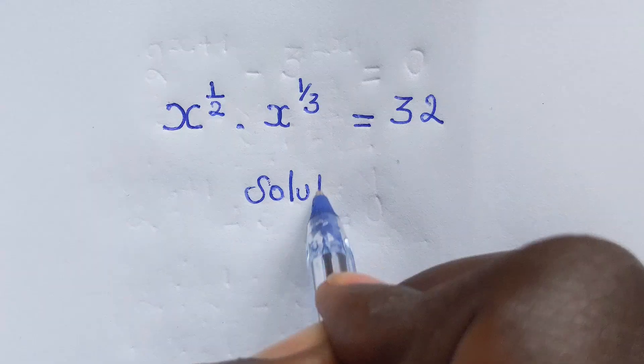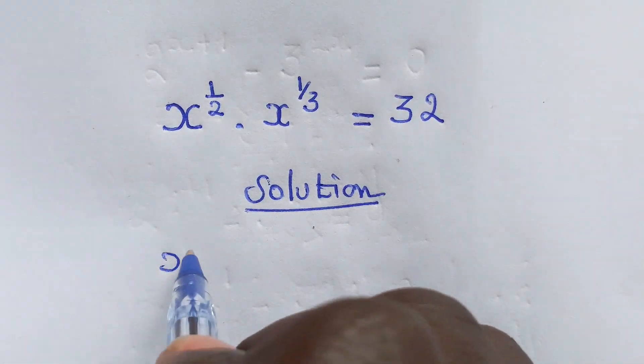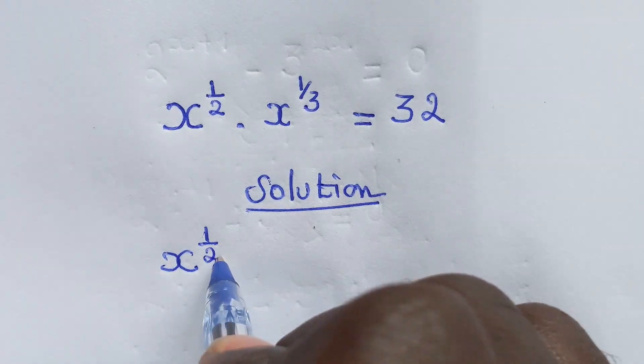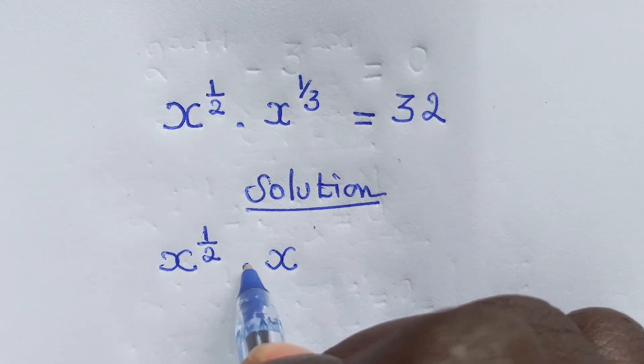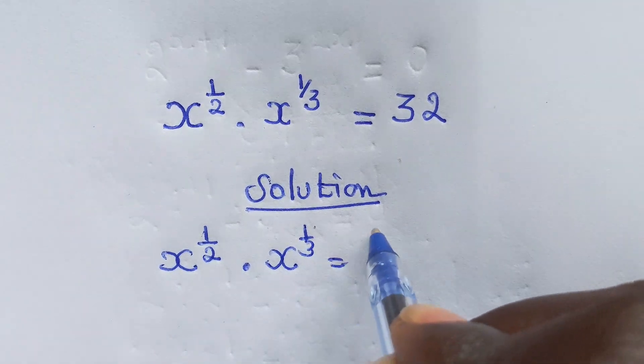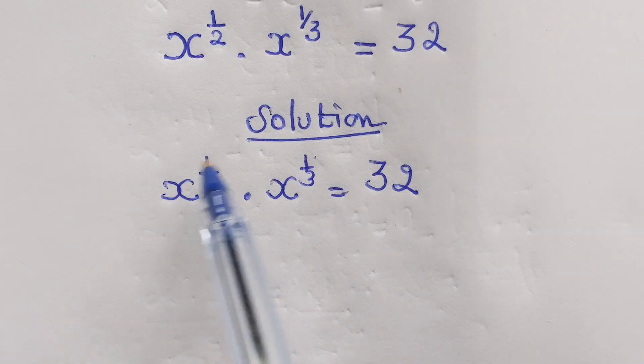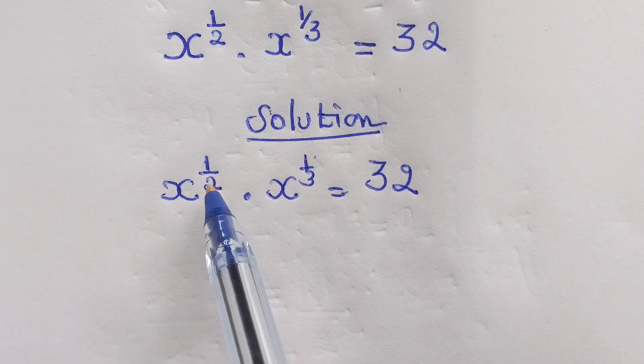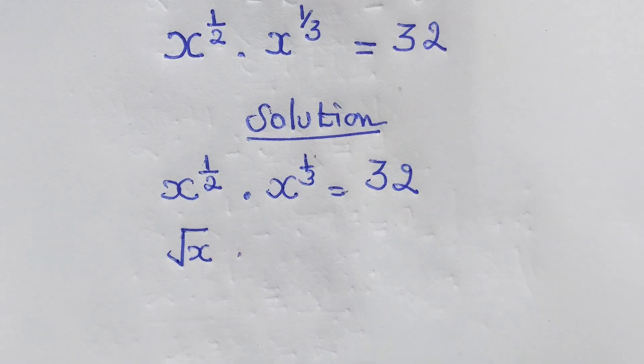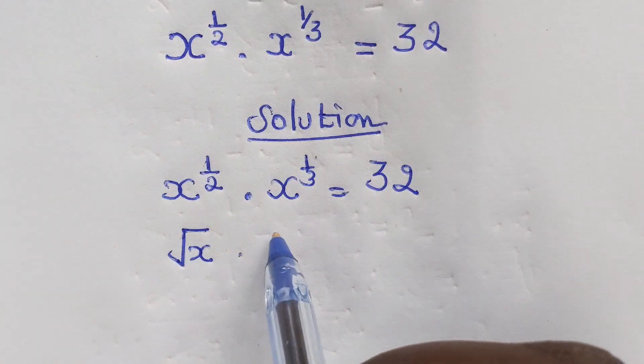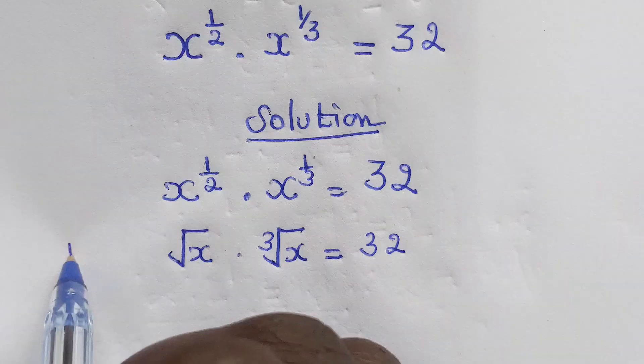Solution. Then by copying what we have, we have x power 1 over 2 times, this dot represents multiplication, times x power 1 over 3 equal to 32. And here, if you have this one, remember that x power 1 over 2 is equal to square root of x times x power 1 over 3, remember that is cubic root of x, which is equal to 32.